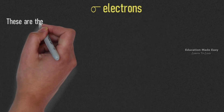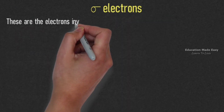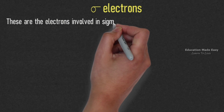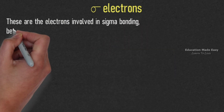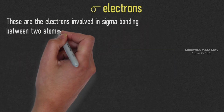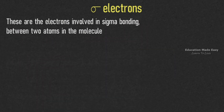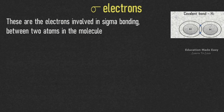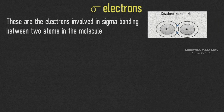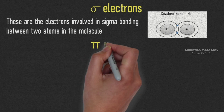Sigma electrons are the electrons involved in sigma bonding between two atoms in the molecule. For example, the covalent bond in H2 molecule is made with sigma electrons.